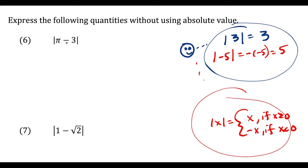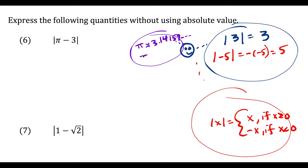When doing these questions, I compare the numbers being subtracted. Pi is roughly 3.14159, so pi minus three is greater than zero. Since pi minus three is greater than zero, it falls into the top category where the absolute value of that term is just equal to the term itself. So the absolute value of pi minus three is just pi minus three.